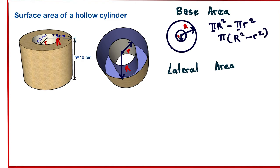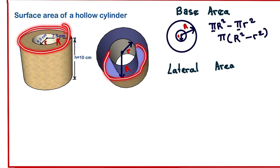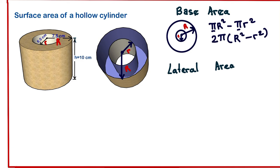Remember, we have two rings — one at the top and one at the bottom — so we multiply by 2. We can then apply the principle of the difference of two squares, writing this as 2π(R + r)(R − r). That concludes the base area portion of our formula.